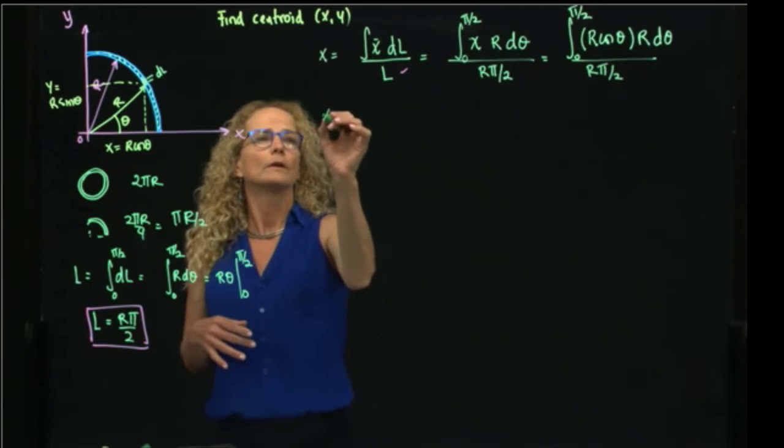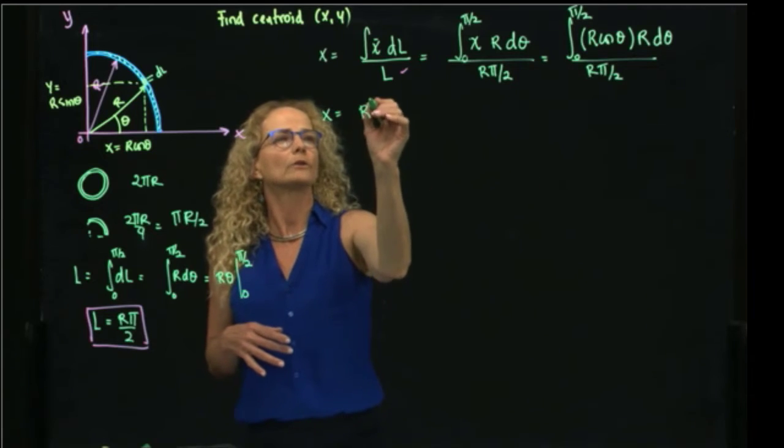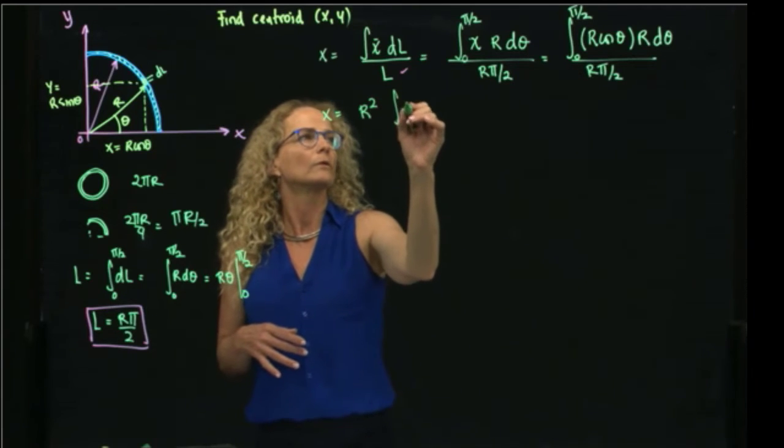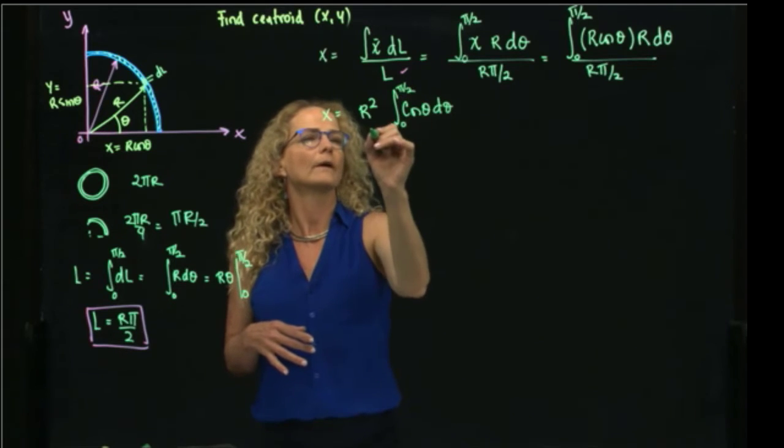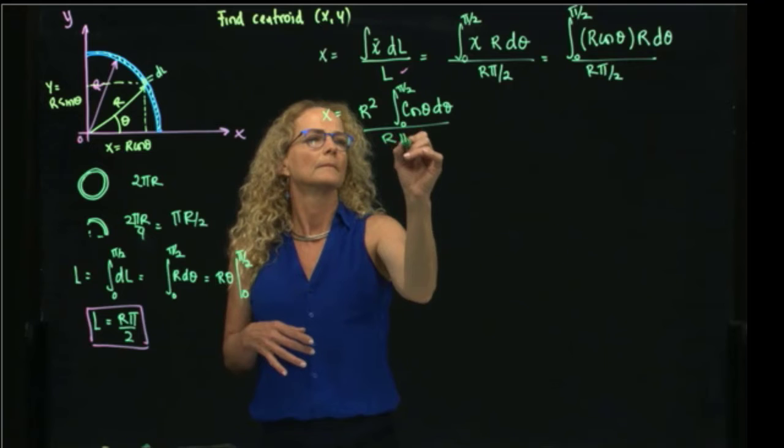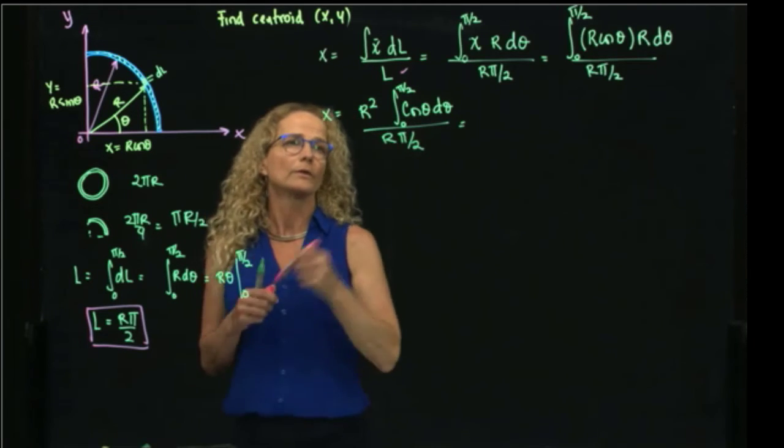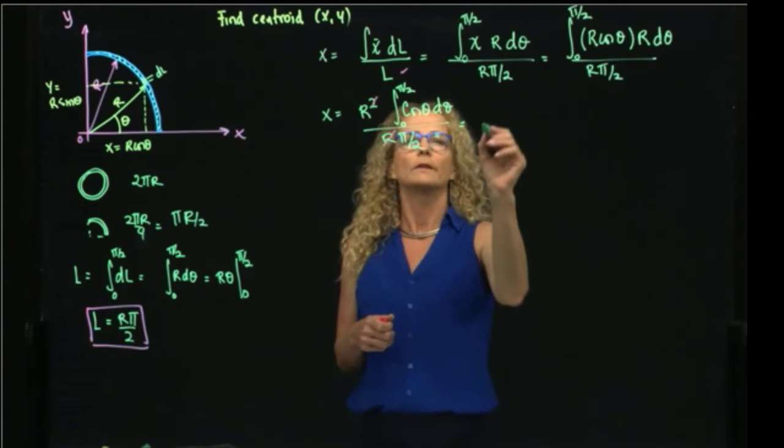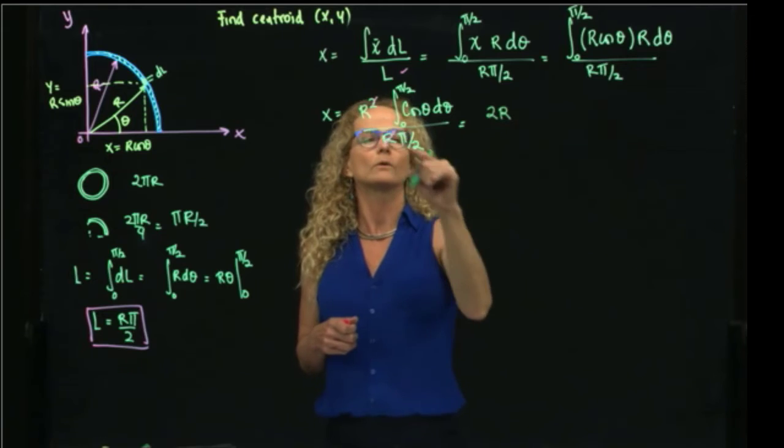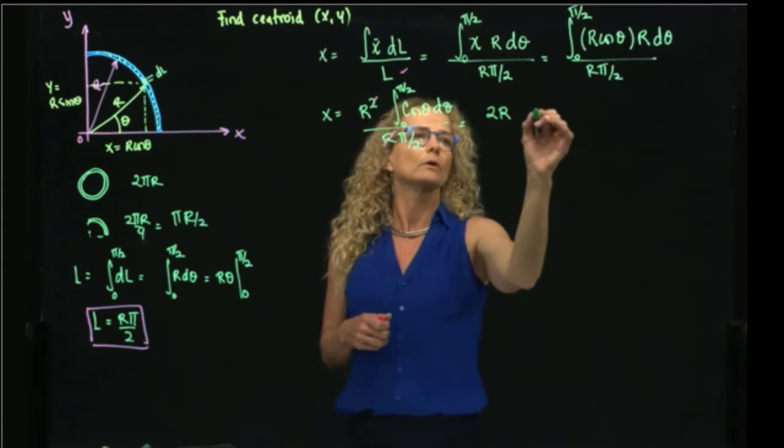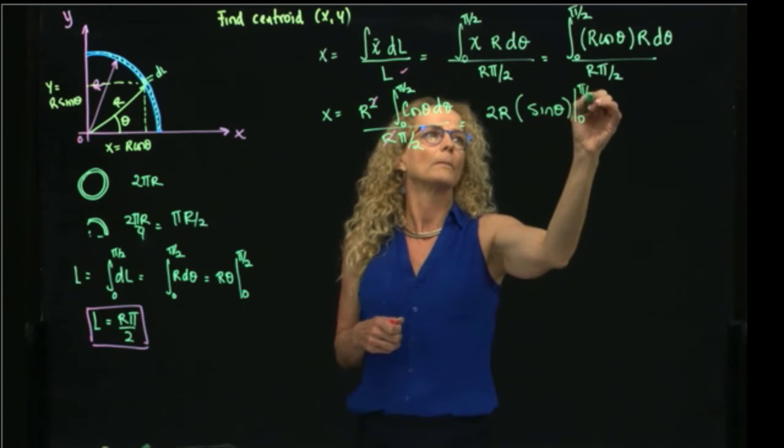So r, of course, is a constant, so we can pull it out of my integral, and then I have the integral of cosine, which we all know that is sine, right? So we can cancel out one of the r's, and then we will have that this is 2r over π, right? That goes to the integral of cosine is sine of theta, evaluated from 0 to π/2.